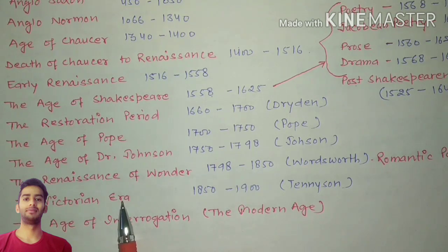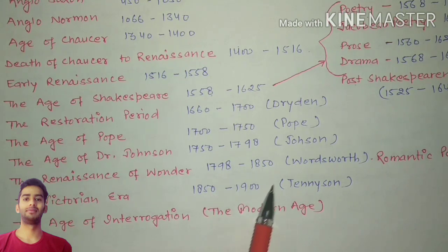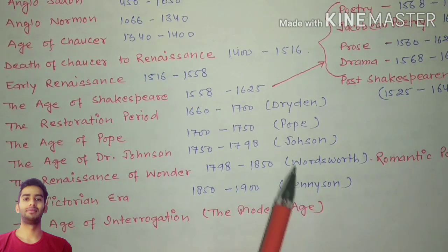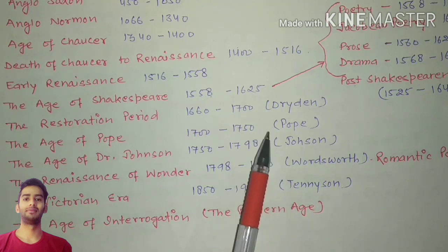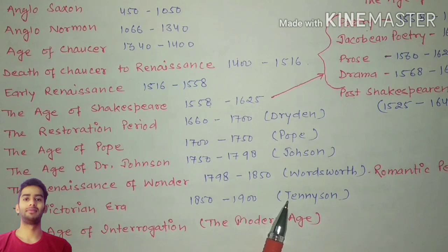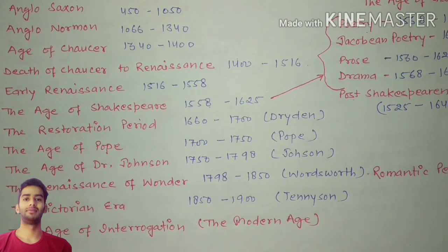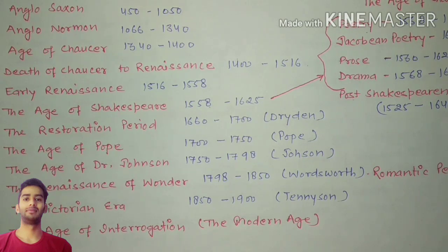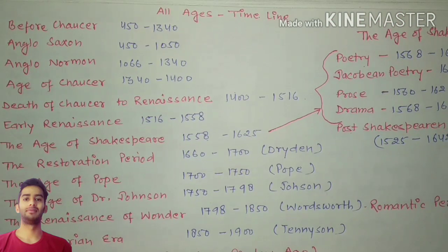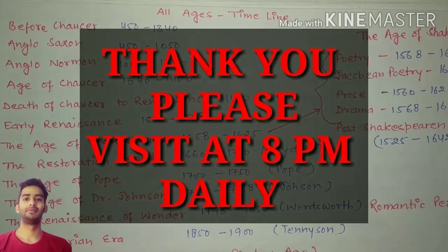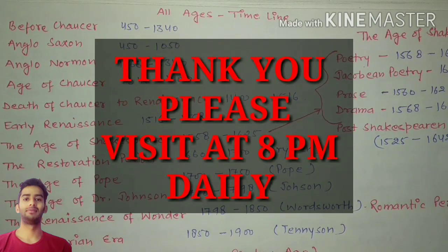The Victorian Era spans 1850 to 1900, also called the Age of Tennyson. These are the representative writers of the age. The Age of Interrogation, or the Modern Age, is considered to start from the 20th century — sometimes referred to as after World War I. Hopefully you liked the video; please support the channel, subscribe, and share with your friends. Thank you for watching, see you in the next video.